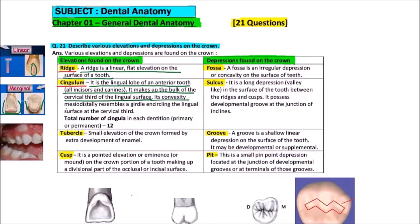Its convexity mesiodistally resembles a girdle circling the lingual surface of the cervical third. So if we count the total number of cingulum, it will be equivalent to the total number of incisors and canines, and that will come out to be 12 in both types of dentitions, primary and permanent.